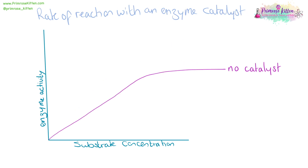An enzyme can be used as a catalyst for a rate of reaction. What we will see is the reaction will start to happen much faster, but it will end up at the same point and the reaction will probably end faster. This is because there are going to be other limiting factors, like enzyme concentration, substrate concentration, or reactant concentration.